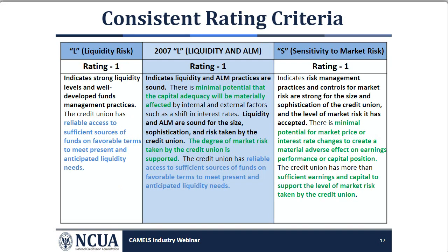The next several slides show how the 2007 combined L component rating criteria is now separated between the updated L component and the new S component. Color coding shows how content from the 2007 ratings are similar to the content included in the CAMELS L and S ratings. The middle shaded section includes the 2007 rating criteria. Blue and green font content is then mapped to the updated L component and new S component respectively. The biggest change is documenting the evaluation of liquidity and sensitivity to market risk rating separately.